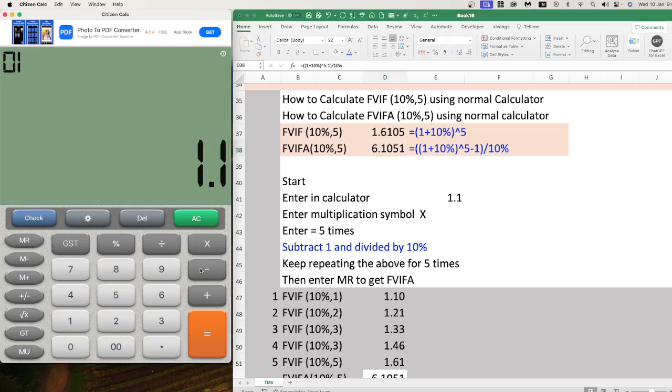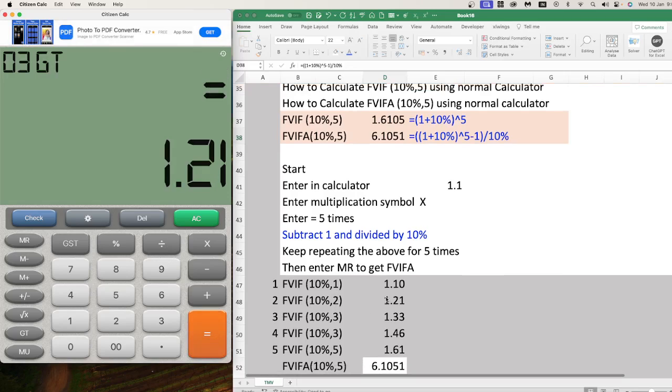Multiply with the multiplication symbol, then enter equals. You will get the second year FVIF. Press equals again, you get FVIF for the third year. Press again for the fourth year, and again for the fifth year.